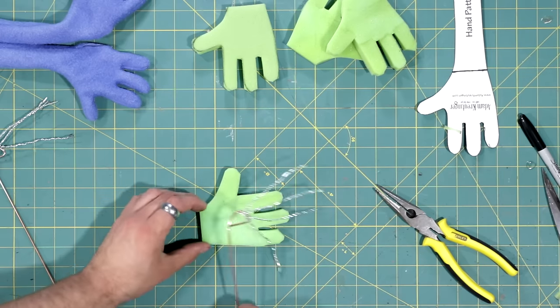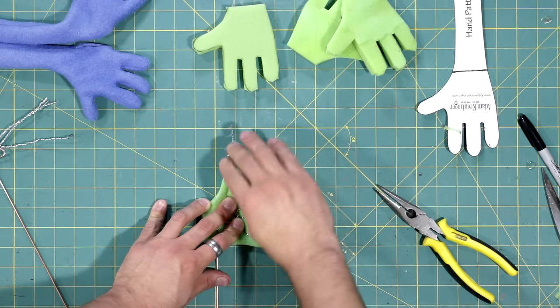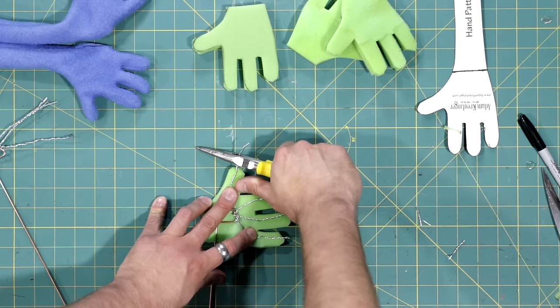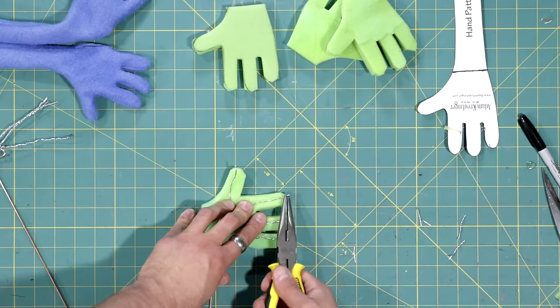Next, I lay this over the foam hand to make sure that it fits. I clip off the excess, and then bend the tips over so it doesn't end up poking through the fingers.